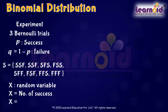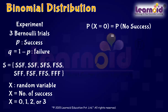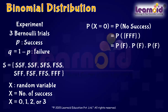X can take values 0, 1, 2, or 3. Now let us find the probability distribution of the number of successes. Probability of X equal to 0, i.e. no success, is equal to the probability of getting all failures, which is equal to P(F) times P(F) times P(F).